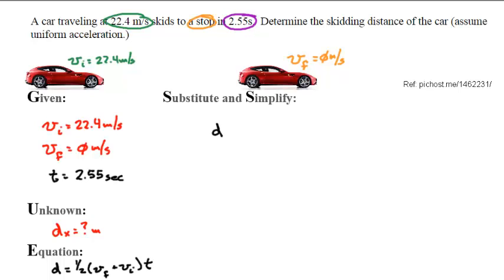I don't know what distance is, so I'm going to write the variable equals all of this over 2. That equals velocity final, which is 0, plus 22.4—that's my initial velocity—times 2.55.